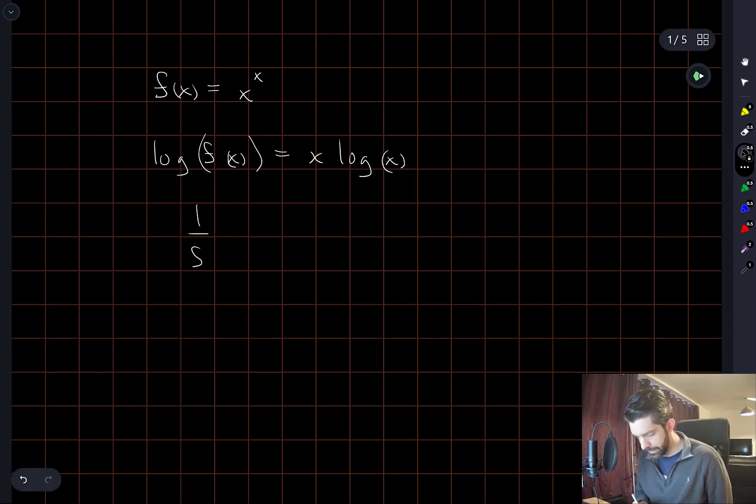On the left I get 1 divided by f of x, and by the chain rule this gets multiplied by f prime x. And on the right, using product rule, I get log x plus 1.